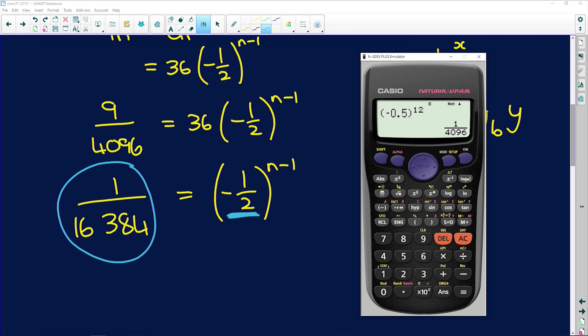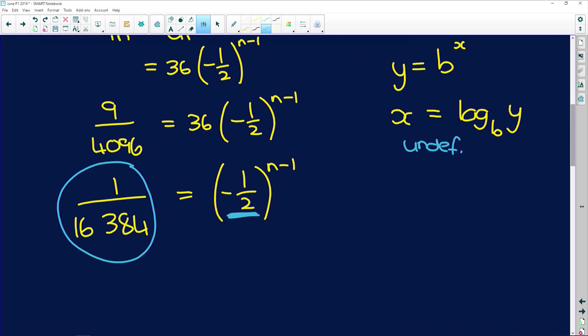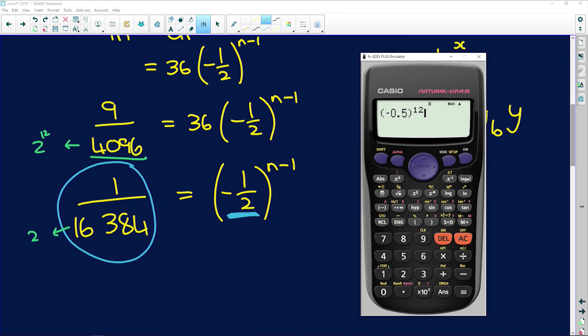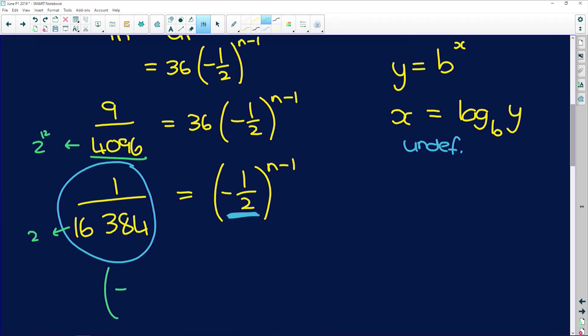So this 4096 over here is 2 to the power of 12. So we're getting closer. We need to express this number as 2 to the power of something. If I say negative 1 half to the power of, let's say, 14. Look at that. It's exactly the same number here. So I know that this left-hand side is negative 1 half to the power of 14.